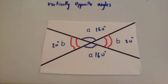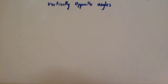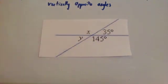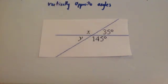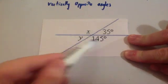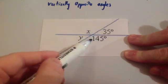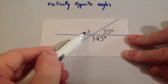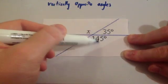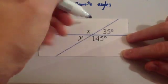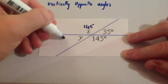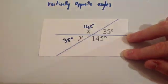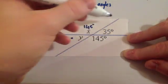Watch the videos on alternate and corresponding angles as well. Here I've got a typical question. You've got X, Y, 135, 145, and 35 degrees, and you've been asked to find X and Y. Because X is opposite the 145, you can straight away write down X equals 145. And because Y is opposite 35, you can write down Y equals 35. So these are vertically opposite angles — when two lines intersect, the opposite angles are equal.